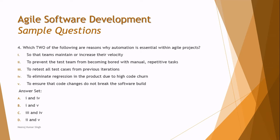Question 4: which two of the following are reasons why automation is essential within agile projects? Option A: so that teams maintain or increase their velocity — yes, that is one important reason in agile. Option B: to prevent the test team from being bored with manual testing and repetitive tasks — that is an unprofessional statement, which you can dismiss.